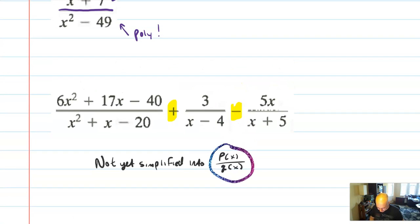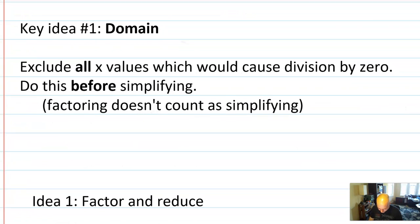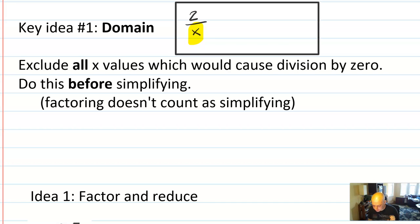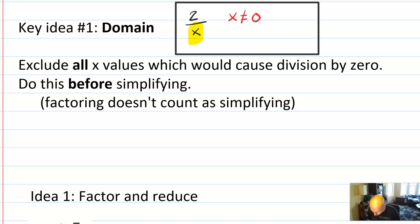Another key idea of rational expressions is the idea of domain. Whenever you have a fraction, there's one thing you really have to avoid, and that is division by zero. Division by zero is not well defined — it causes an error. Say that I had the rational expression 2 over x. I would need to include with that expression the caveat that x cannot equal zero. We call these the excluded values of that rational expression.